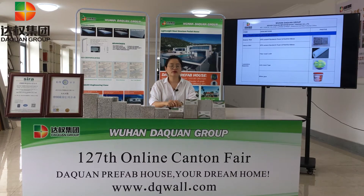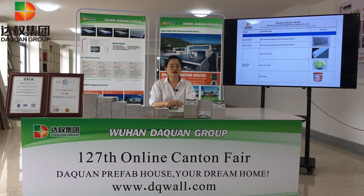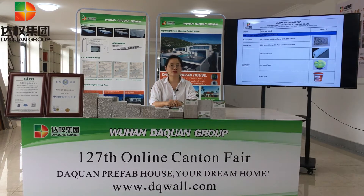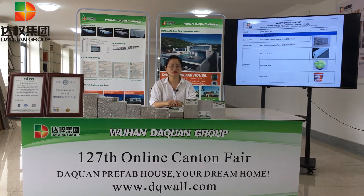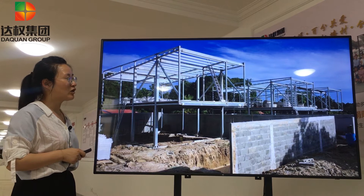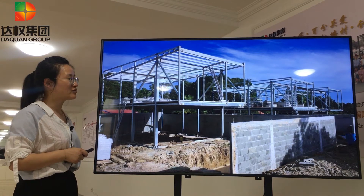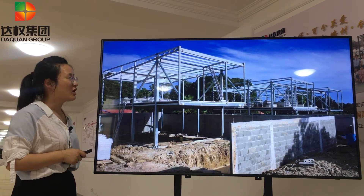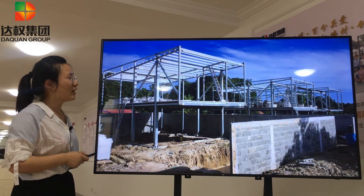Hello everyone, welcome to Dachuan Life Show. I'm your host Linda. Today I will take you with me to our prefab house construction materials. We have two kinds of steel structure for our prefab house. The first one is this kind of steel structure which uses the hollow section or edge steel.